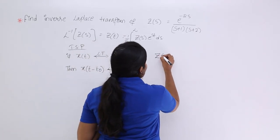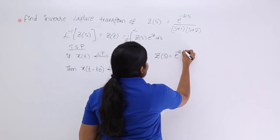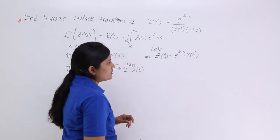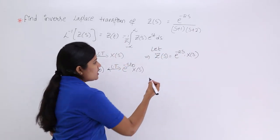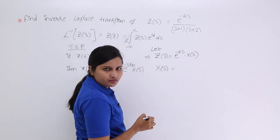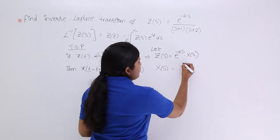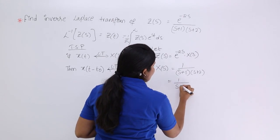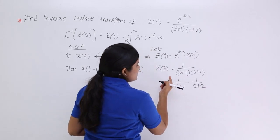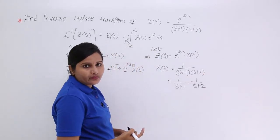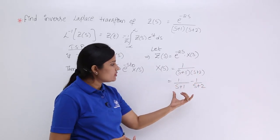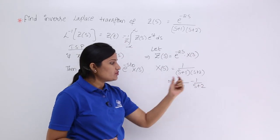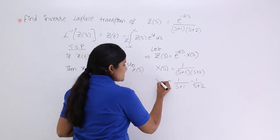So here I am imagining Z(S) as a shifted transform. I write Z(S) = e^(-2S) · X(S), where X(S) = 1/[(S+1)(S+2)]. By taking partial fractions, we can separate this as 1/(S+1) minus 1/(S+2), giving 1/(S+1)(S+2). So this is your X(S).